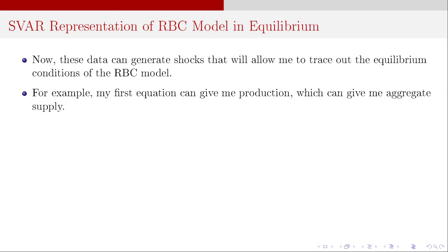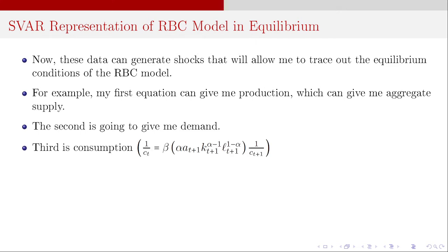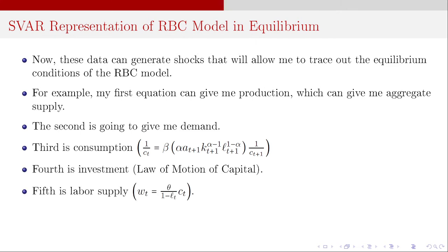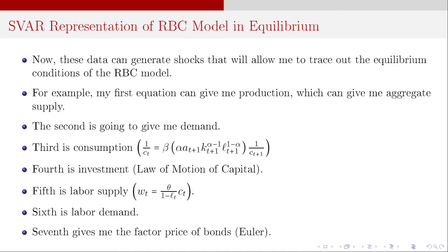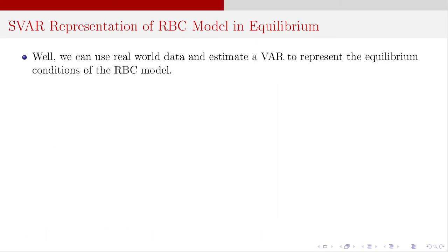Equation one gives us production — we can think of that as aggregate supply. The second gives us demand. Third is the Euler equation — consumption. Fourth is investment, the law of motion of capital. Then we had labor supply, labor demand, and the factor price of bonds. We can use real-world data to estimate a reduced-form VAR, and then impose some of the structure from these equations to represent the equilibrium conditions of the RBC model.